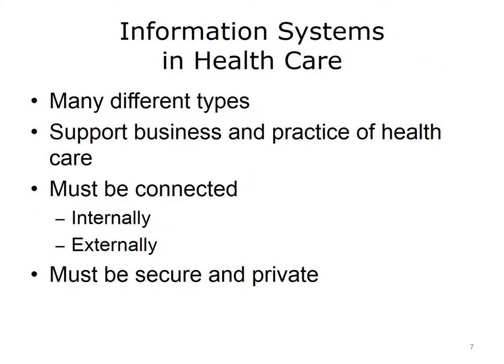There are many different types of information systems used in healthcare settings today. A large hospital, for example, may have dozens of them. Some are very small and specific, such as those that support medical equipment like electroencephalograms or EEGs. Others are large and broad, such as the business financial systems. Together, they support and connect the different business operations, healthcare practices, and settings. The systems must be well connected within the institution, as well as externally, in order to communicate information outside the institution. Because patient data is so sensitive, the information systems must be secure and private.